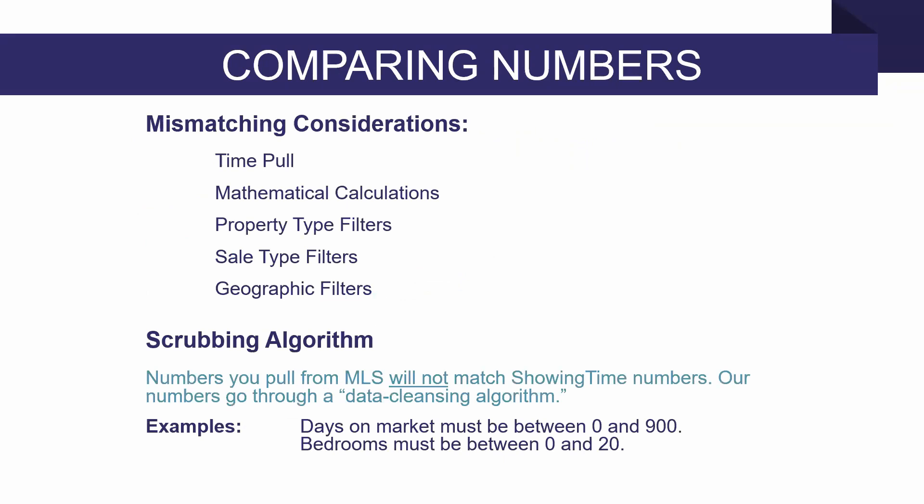If you're a big data nerd, you'll probably at some point compare InfoSparks stats to something you might have run right out of Matrix yourself, and you may find that those numbers don't match. That's to be expected. Every computer system looks at data slightly differently — if they're off by one or two sales or a couple of dollars on price, that's totally expected. If the numbers are off substantially, it's usually because you're not doing an apples-to-apples comparison: you ran the reports at a different time, for a different time period, or you're looking at average versus median, or the filters you've applied aren't the same.